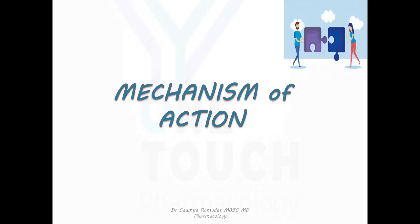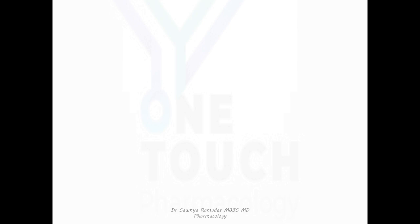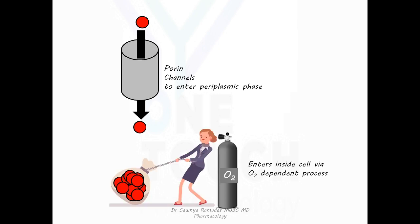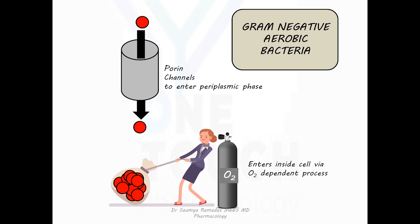Mechanism of action of Aminoglycosides: Aminoglycosides enter the periplasmic space via porin channels. And once in the periplasmic space, they enter inside the cell with the help of oxygen. So, it is an oxygen-dependent process via which the aminoglycoside enters inside the cell. That's why these group of drugs are only active against aerobic bacteria. They have synergistic action with penicillins and other cell wall inhibitors because they aid entry of these drugs inside the cell.